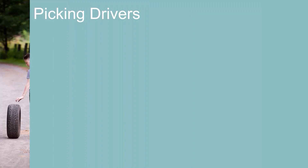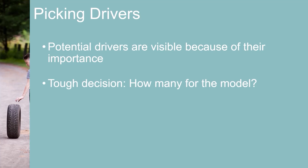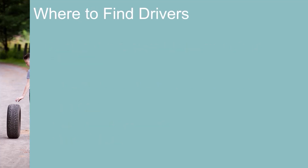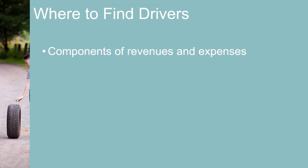Identifying potential drivers is easy — their importance causes their visibility to operational and financial management. The tougher decision is how many of these drivers to incorporate into the model, since adding drivers exponentially increases model complexity and reduces efficiency. Once again, you will have to find a balance between efficiency and accuracy. Here are some places to identify key drivers: break down the components of revenues and expenses — this is a drill-down from the income statement amounts to their causes.